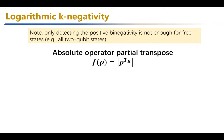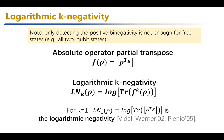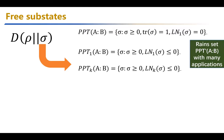We look at log-negativity further and introduce the so-called absolute operator partial transpose: take the partial transpose of your state and take the absolute value. Log-k-negativity is defined by repeatedly applying this function k times, then taking the trace and the log. For k equals one it recovers log-negativity. This is a generalization that turns out to be useful when examining the hierarchy of free substates in entanglement theory.